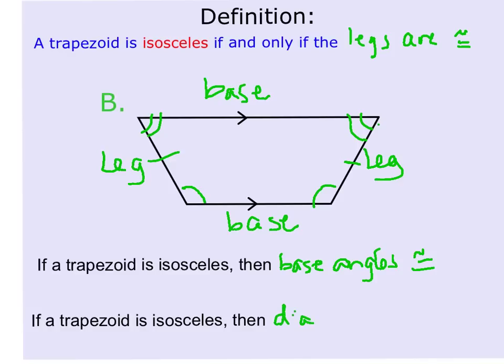The last thing about an isosceles trapezoid is that the diagonals are congruent. In a regular trapezoid, the diagonals might not be congruent, but in an isosceles trapezoid the diagonals are always congruent.